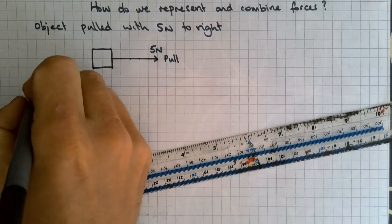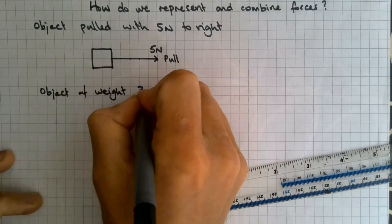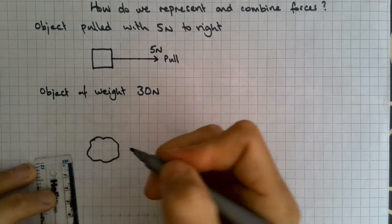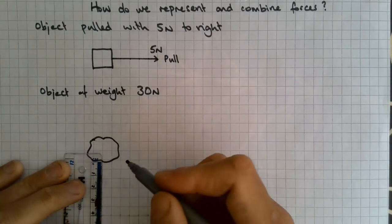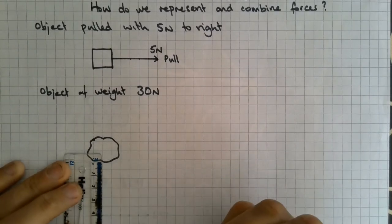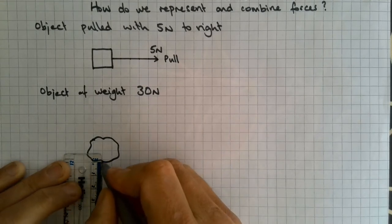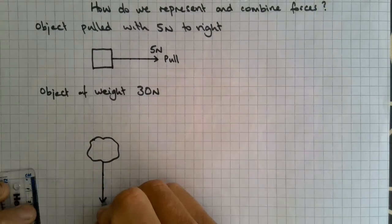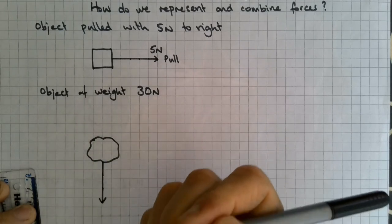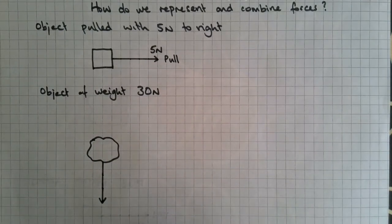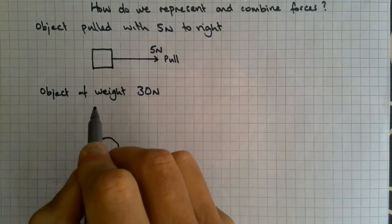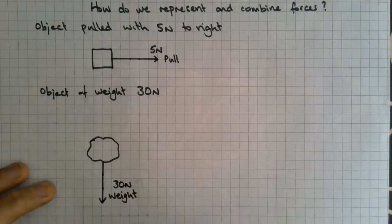Take another example. This time, we've got an object of 30 newtons. Let's take a random shape object this time. Instead of using the squares, I'm going to use the centimeter divisions on the ruler. I'm going to say that 1 centimeter is 10 newtons. So that would be 10, 20, 30 newtons. You notice we'll put the arrow down because I'm inferring that the weight means that the object has got that force of gravity on it. So the force of weight is down. That direction is being implied through the word weight.